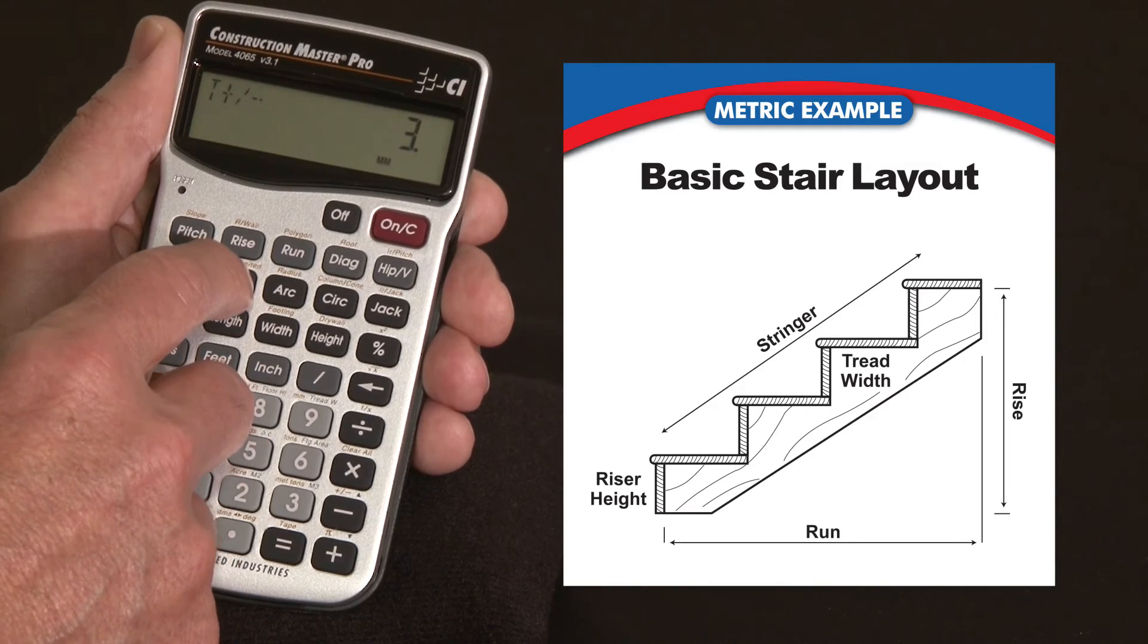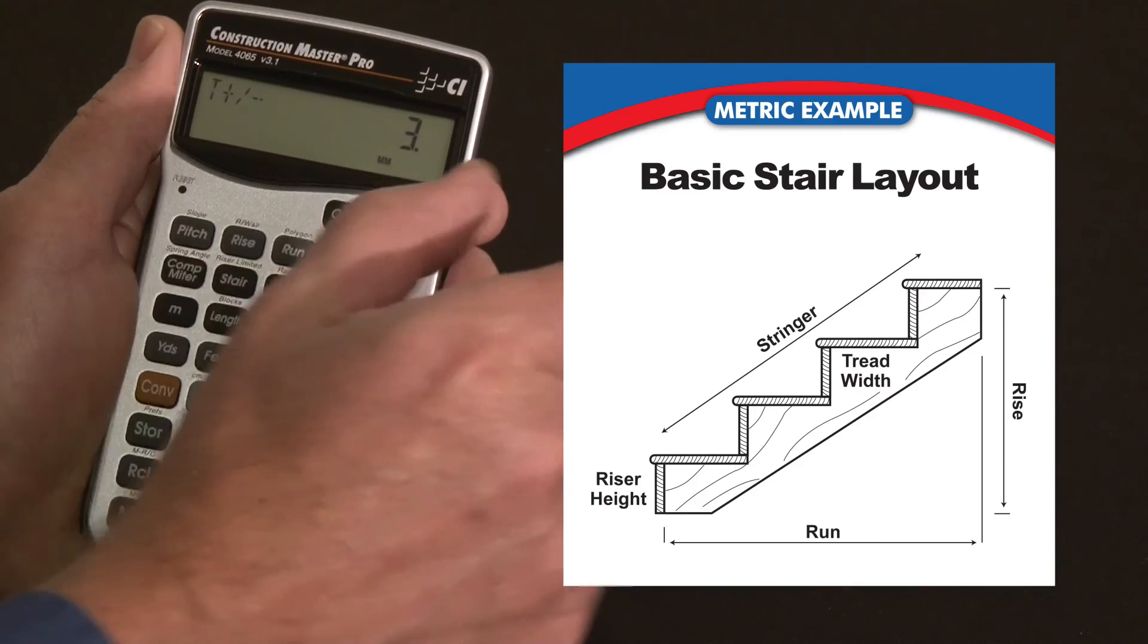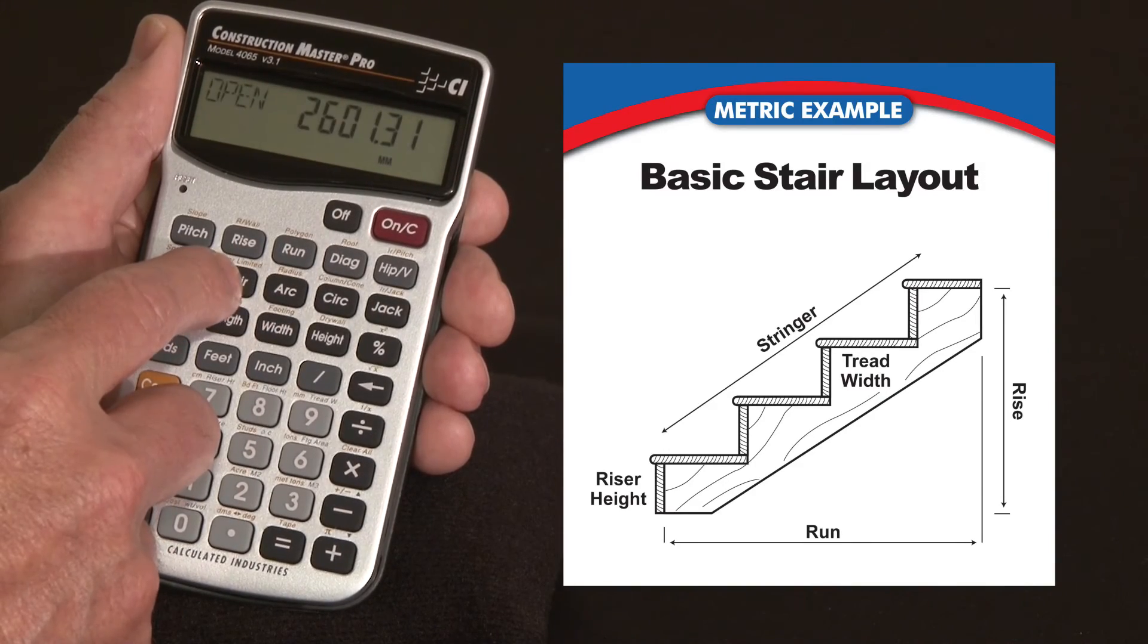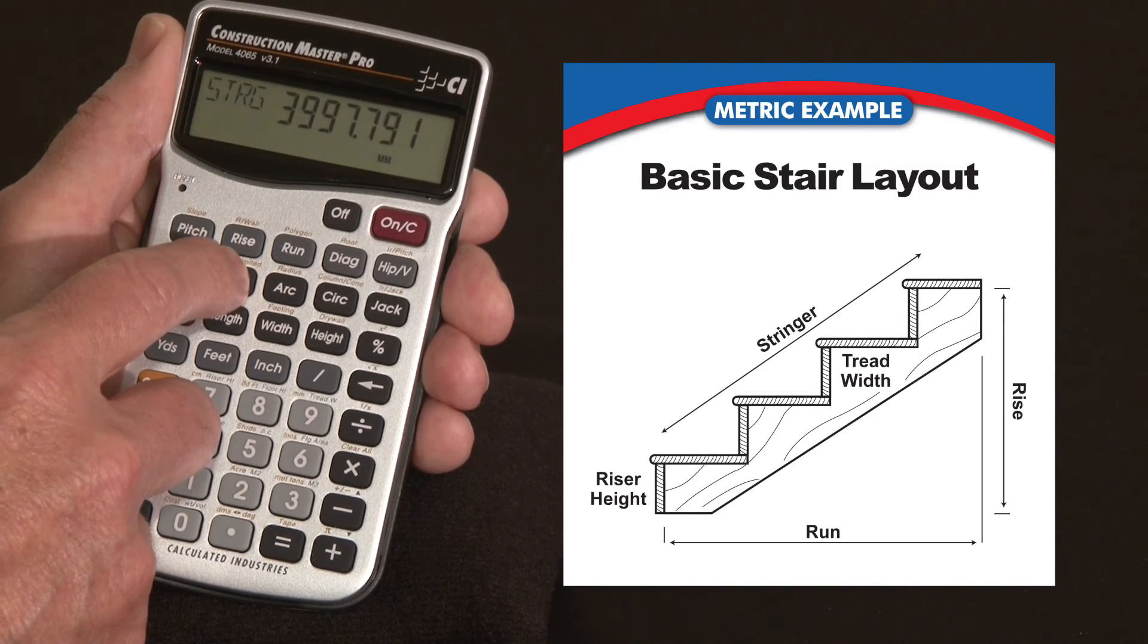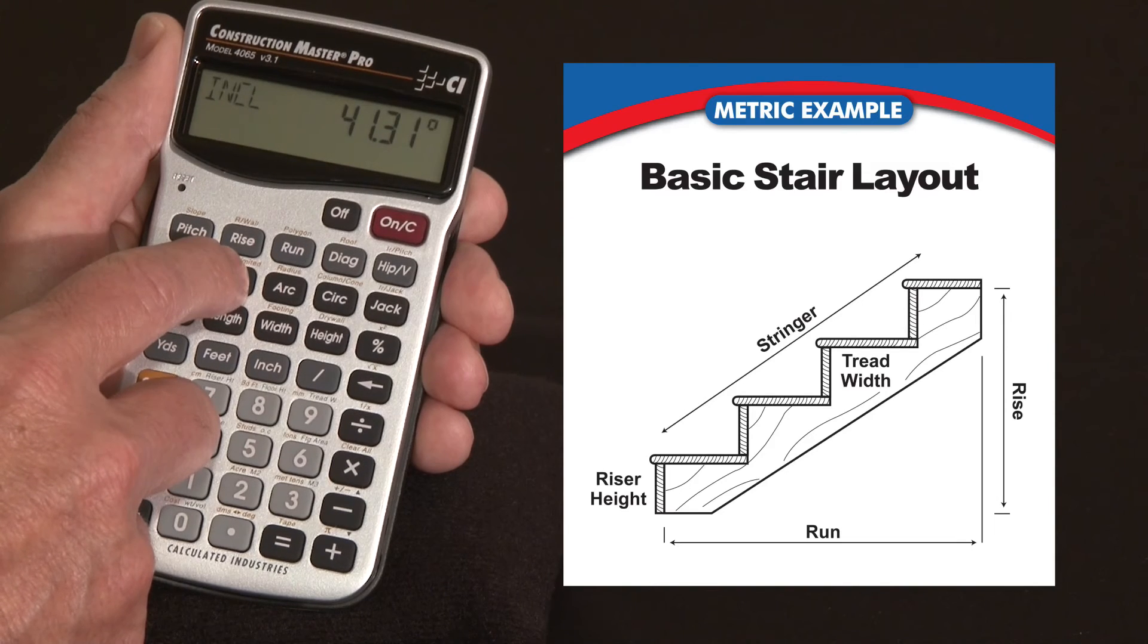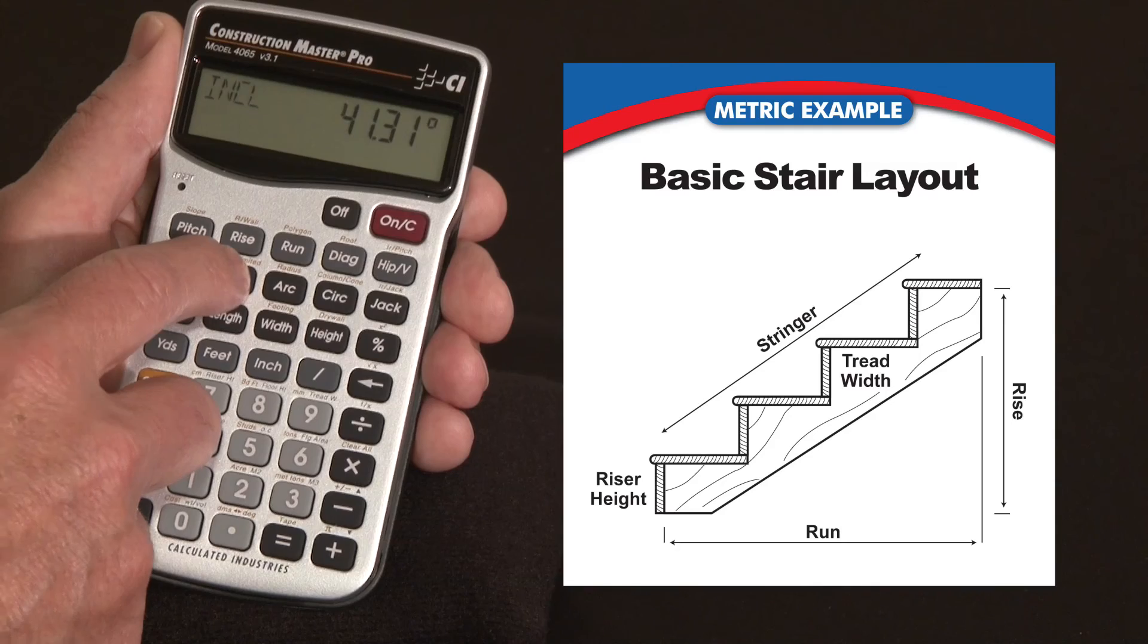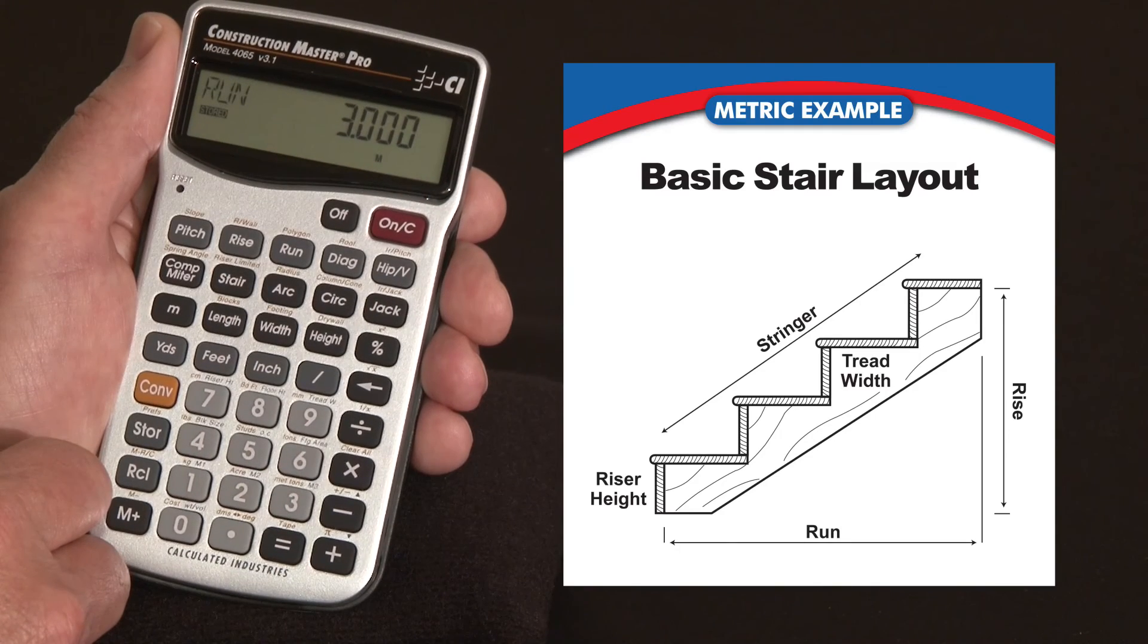There's 13 treads. There's an adjustment of 3mm that you've got to add to some one or several of them to sum up to 3mm. Press it again. The stairwell opening is now 2601mm. The stringer length is 3997mm, and the angle of incline is a little steeper at 41.31 degrees. The last press just gives us our run, which is the 3 meters we entered as the constraint.